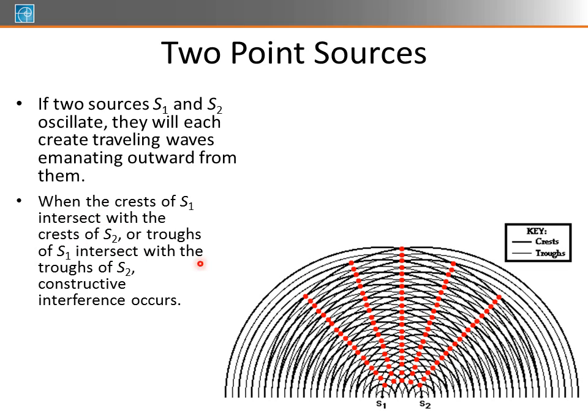we're going to get the point of constructive interference. And these are these red dots along here. So we have all these dots represent a crest showing up with a crest, a trough representing or lining up with a trough.